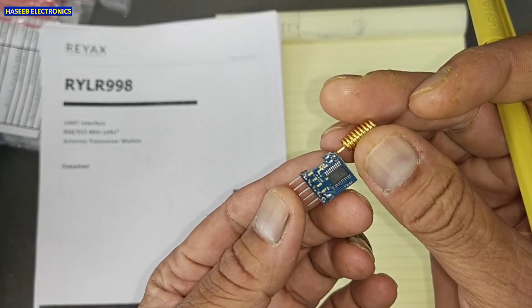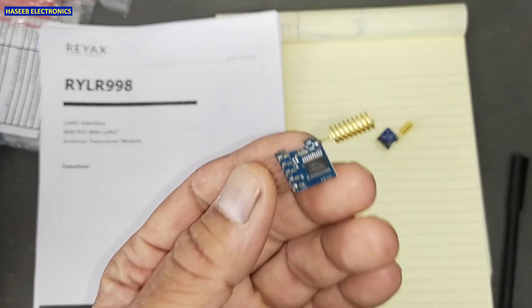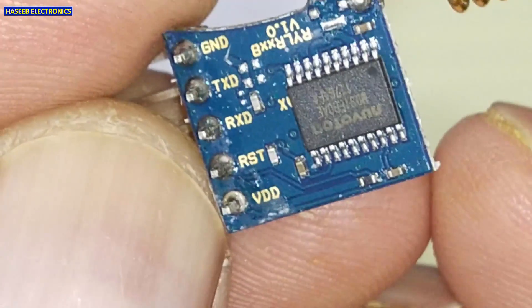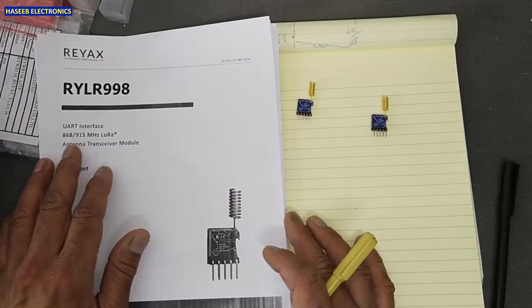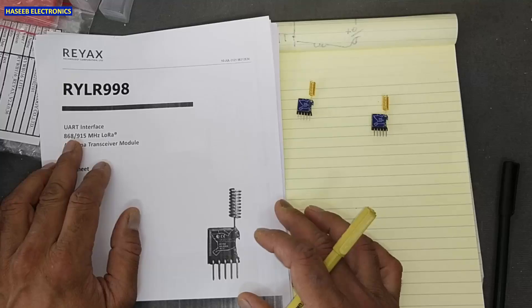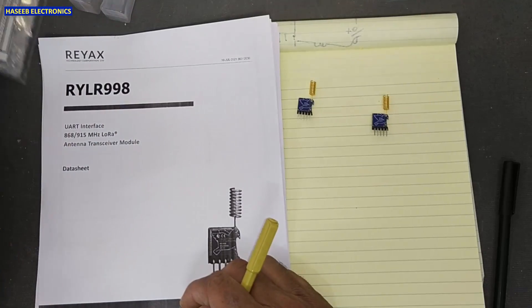It have five terminals here: GND, TXD, RXD, RESET and VDD. It is UART interface - Universal Asynchronous Receiver Transmitter module.